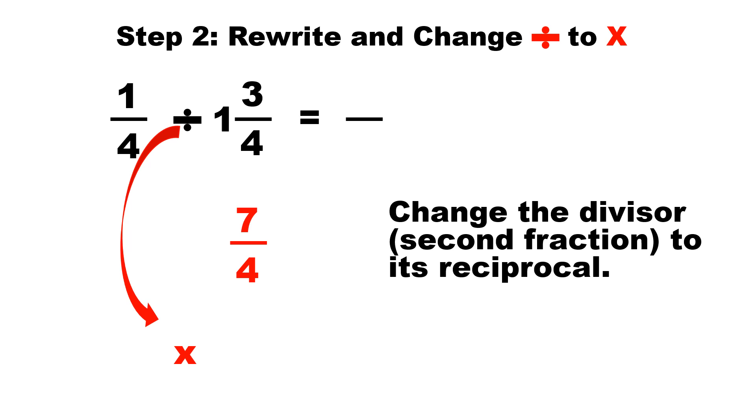So if we have a fraction seven-fourths, we put the seven on the bottom and the four will go on top. And let's rewrite the fraction: one-fourth times four-sevenths equals what?